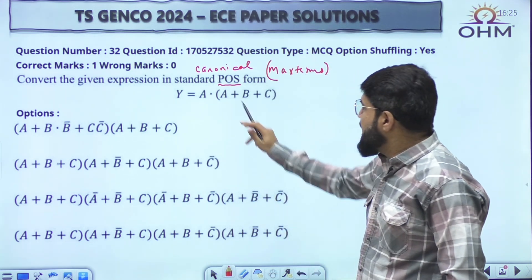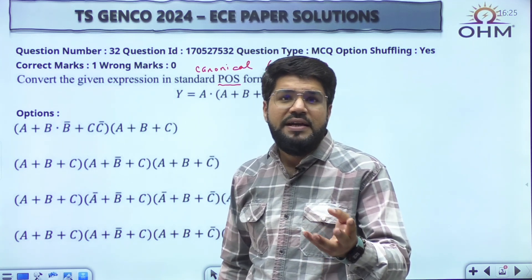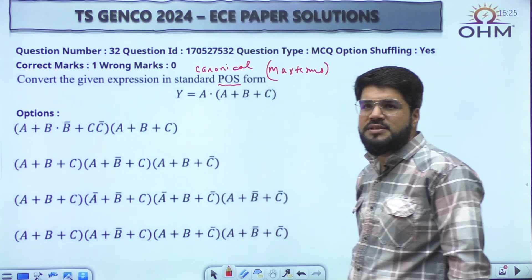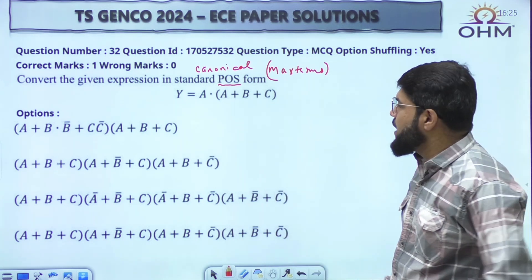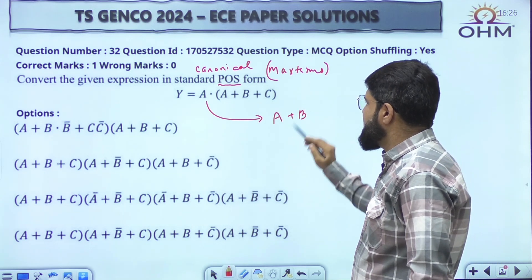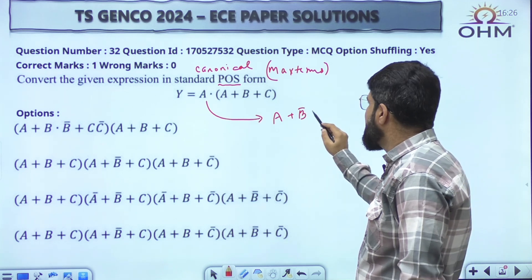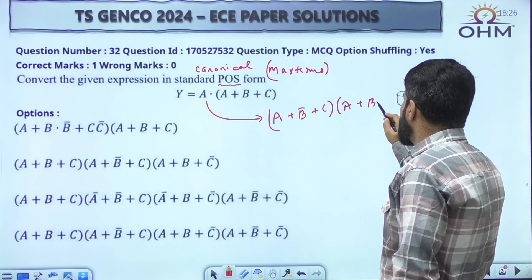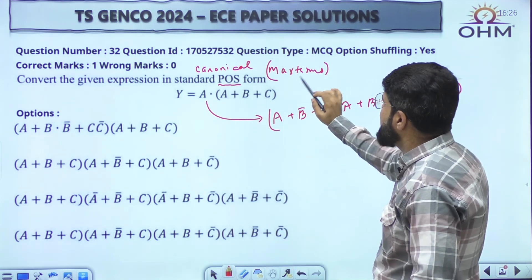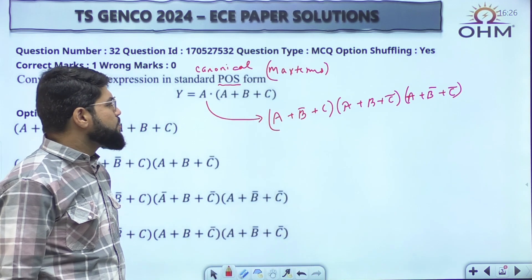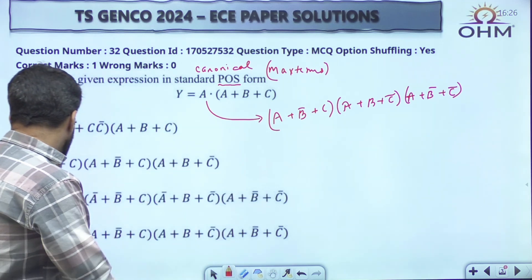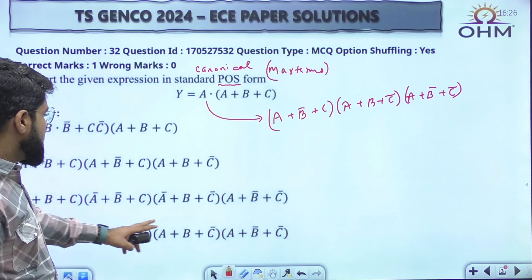In the max term form, A plus B plus C is already a max term — a sum term containing the addition of all three variables in true or complement form. A or A-bar, B or B-bar, C or C-bar — all three literals appear. Now this term 'A' alone can combine with multiple cases for B and C: A plus B-bar plus C, A plus B plus C-bar, A plus B-bar plus C-bar, and A plus B plus C which is already there. These are all the different max terms that come up, and accordingly option number D will be matching.